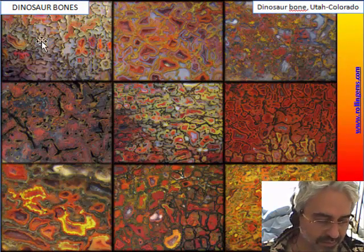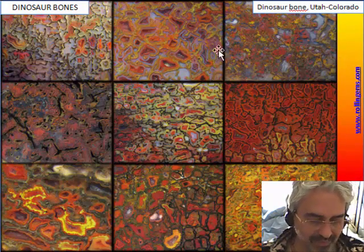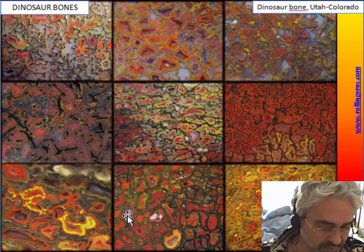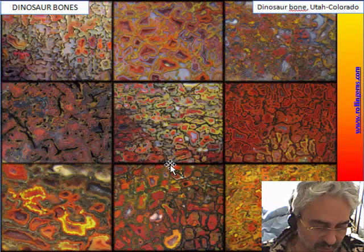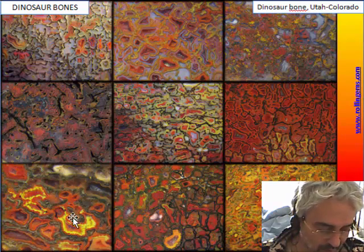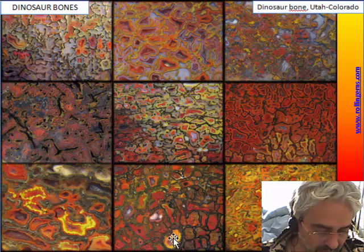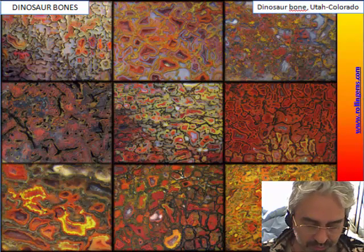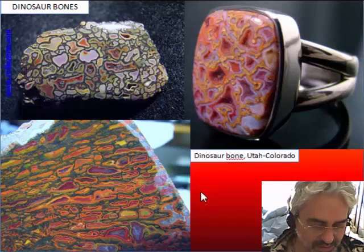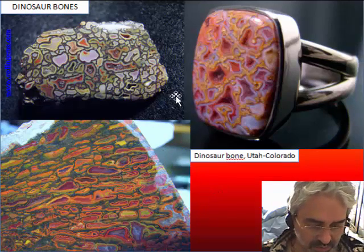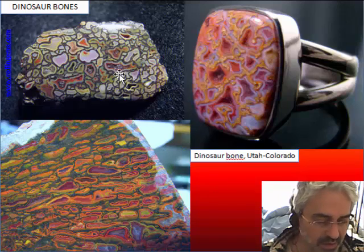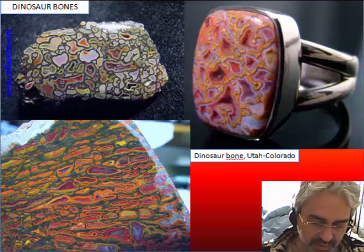There is a huge variety of colors, and the most valued material is when there is a beautiful color and when neighboring cells show a different color. Some very high quality, gem-quality material has amazing colors.